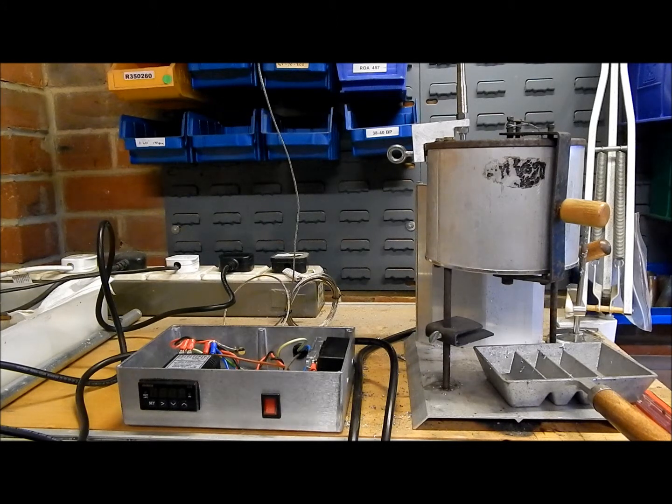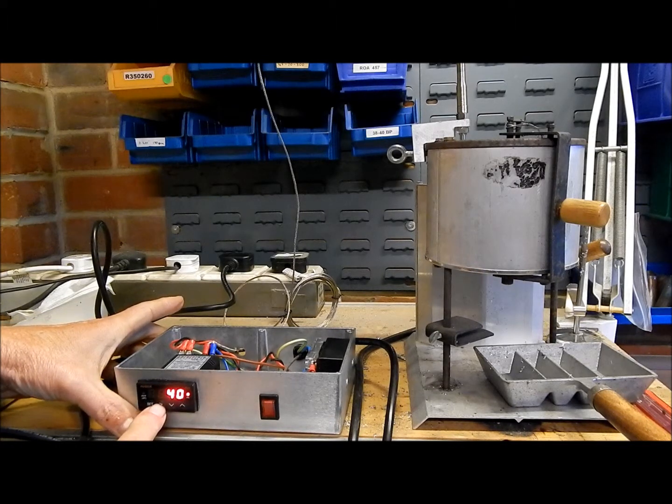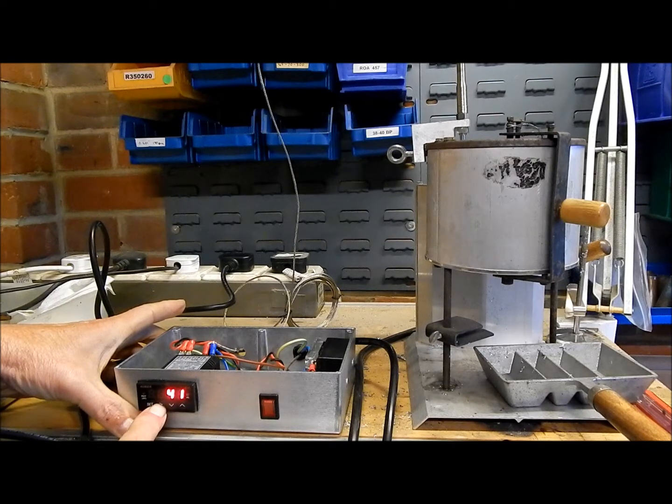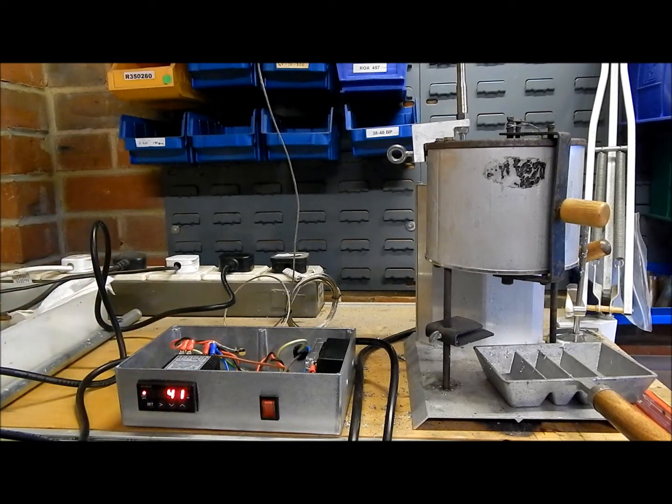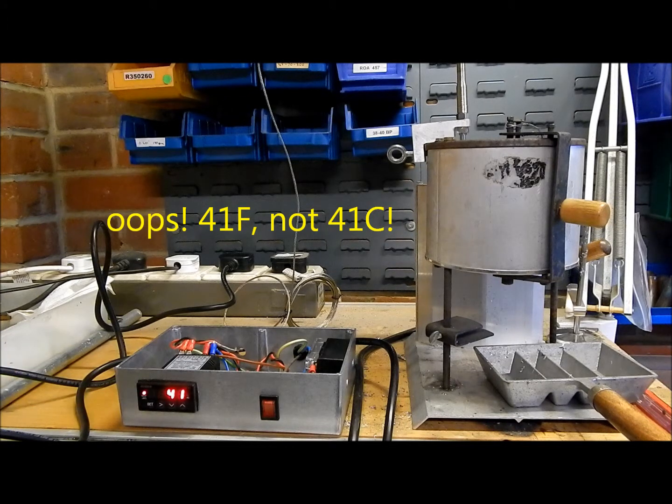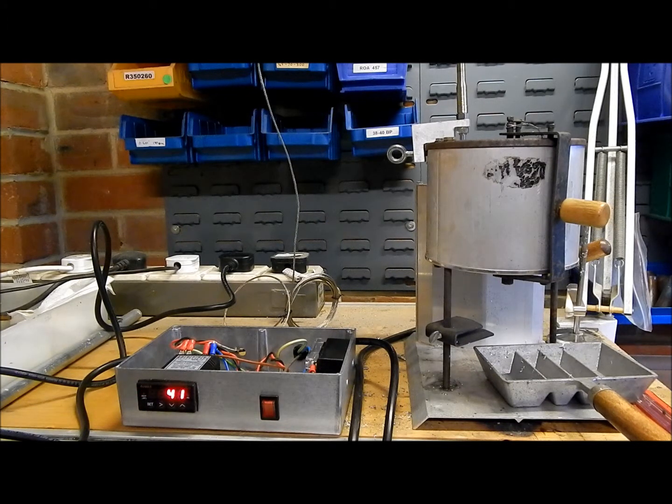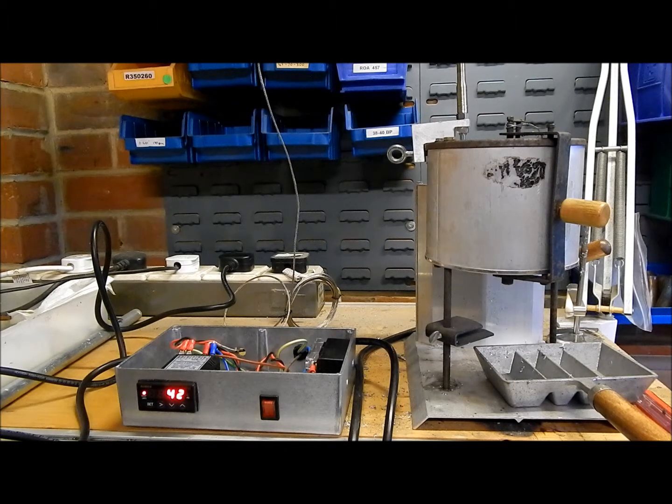I'm going to switch it on and set it up for auto tuning. So at the moment it's displaying the current temperature. A bit cold in here this morning. 41 degrees C. This flashing light here means that it's on the auto tuning cycle. And what it will do, it will heat up to the set point, overshoot and then cool down again. And it will do that at least three times. And when it's done that it can work out the best control strategy for this particular application. So really the user doesn't have to do anything except press a few buttons.